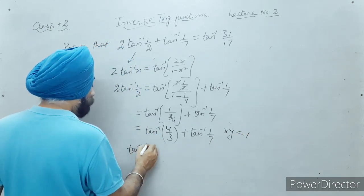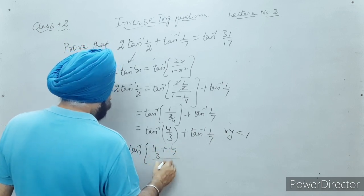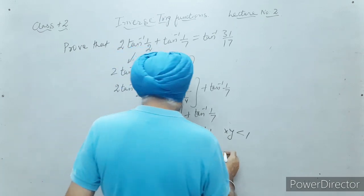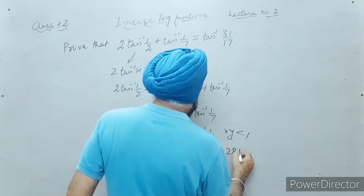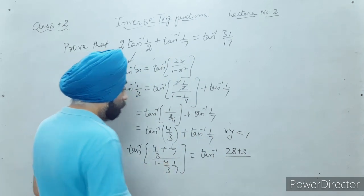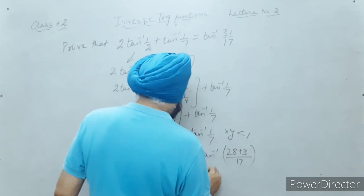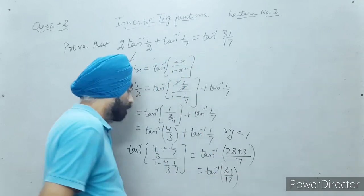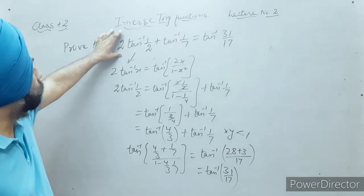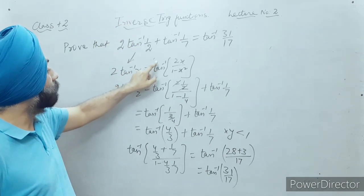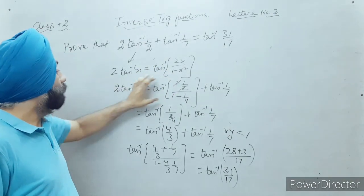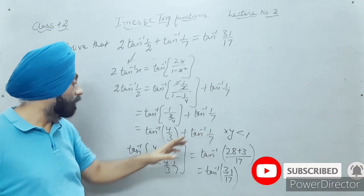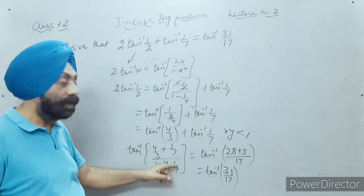Tan inverse (31/17) is the answer. I used the formula 2 tan inverse x equals tan inverse [2x upon (1 minus x²)] to get tan inverse (4/3) plus tan inverse (1/7). Their product is less than one, so I applied tan inverse [(x plus y) upon (1 minus xy)] and got the required result. Next sum: evaluate tan of [2 tan inverse (1/5)]. Using the formula 2 tan inverse x equals tan inverse [2x upon (1 minus x²)], I get tan of tan inverse [2/5 upon (1 minus 1/25)], which is tan of tan inverse [(2/5) times (25/24)] equals 5/12. So the value of tan(2 tan inverse 1/5) is 5/12. These kinds of sums generally come as one or two mark questions in the board exam.